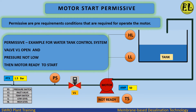Motor start permissive: permissives are pre-requirement conditions required to operate the motor. For example, in a water tank control system — valve V1 open and pressure not low — then motor is ready to start.